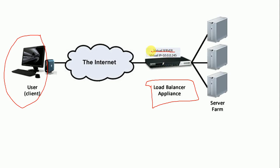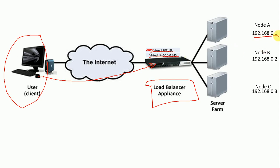This is my load balancer — let's say it is F5 LTM. We will create one virtual server in our F5 LTM and assign it an IP address. When my user wants to access www.test.com, they have to come to my load balancer and hit this IP address, not the IP addresses of my nodes. We are fooling our user — the user is not aware of the backend IPs. The user's connection is only up to F5 LTM.